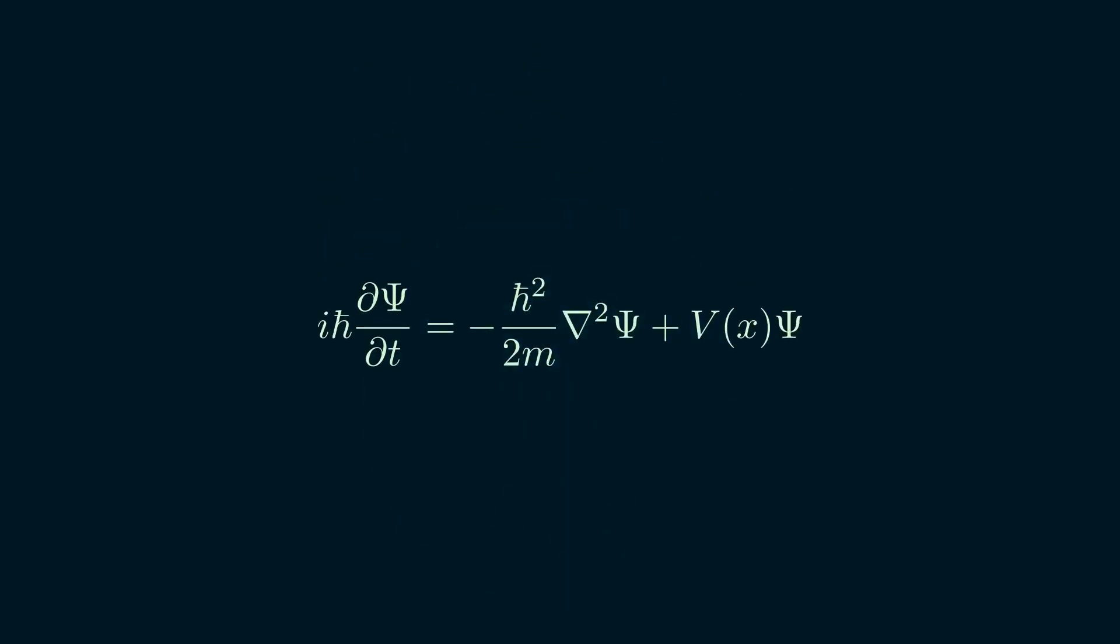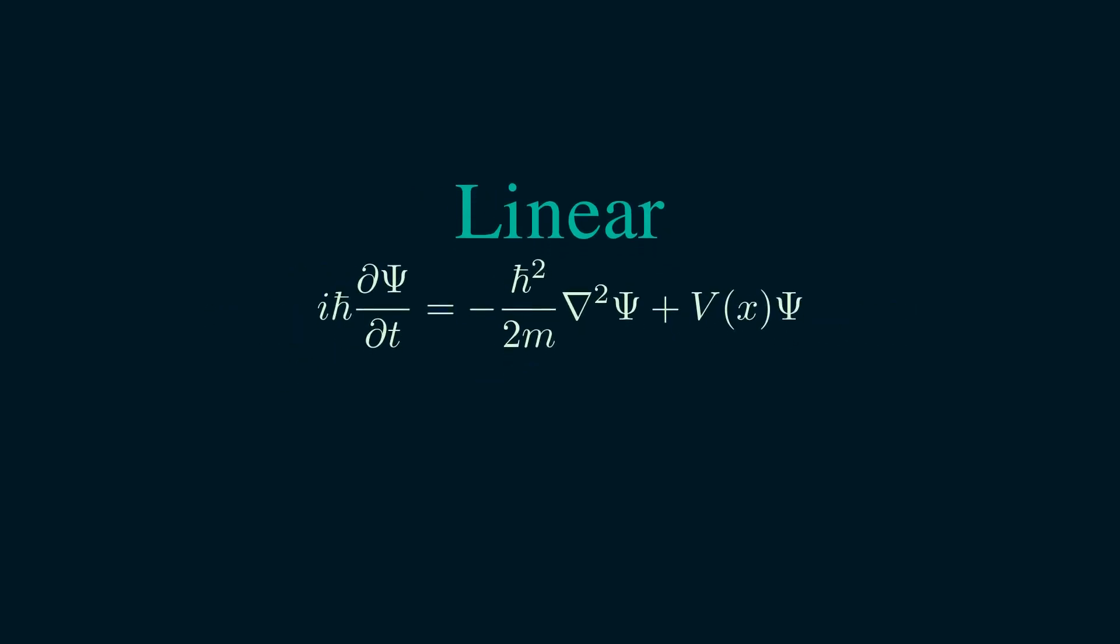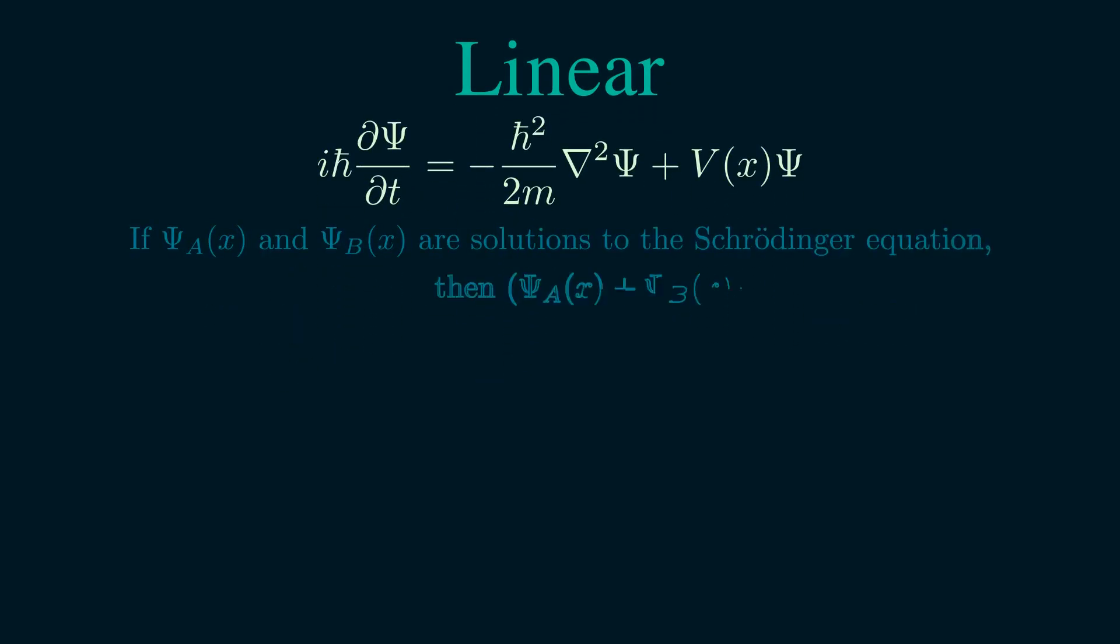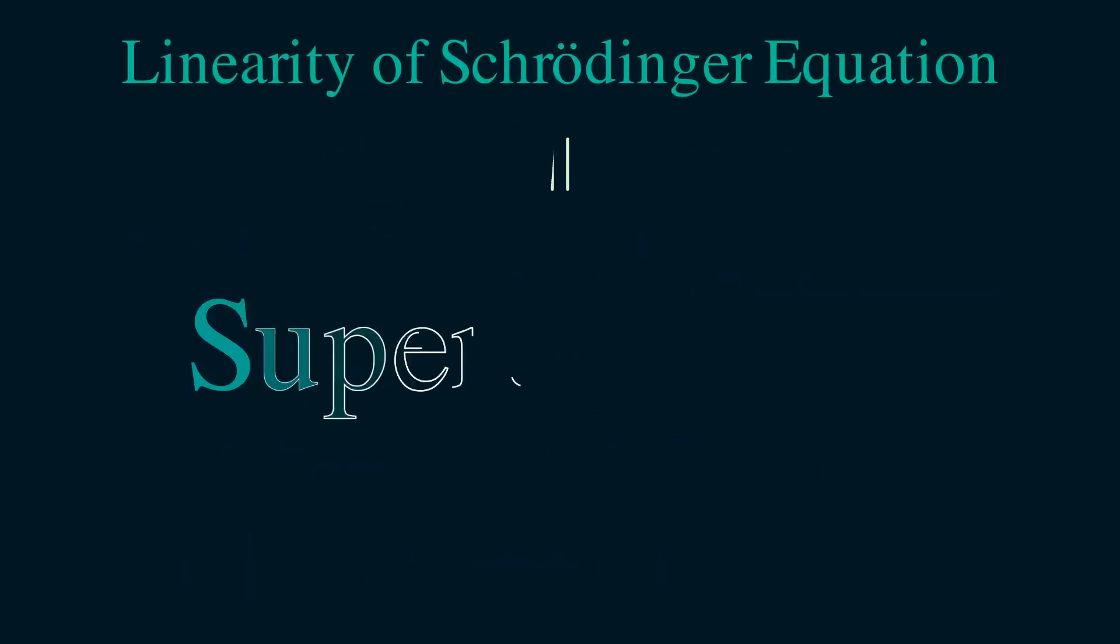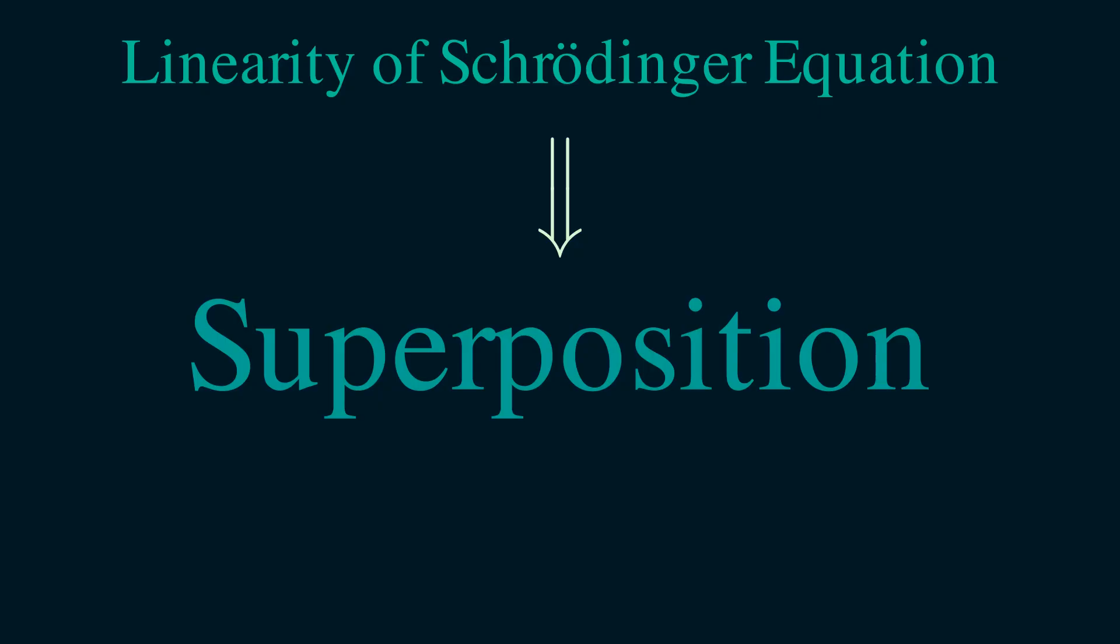A key property of the Schrödinger equation is that it is linear. Linearity means that if two wave functions are valid solutions, then any linear combination of them is also a valid solution. Feel free to pause here to read the proof. And this is where the principle of superposition comes from.